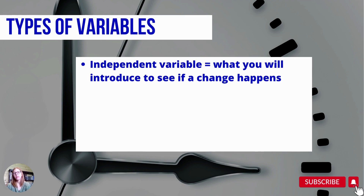So in social sciences, particularly in mental health or counseling research, it might be the intervention that you're trying. There's a lot of studies out there on cognitive behavioral therapy, and the CBT intervention that you're using would be your independent variable.